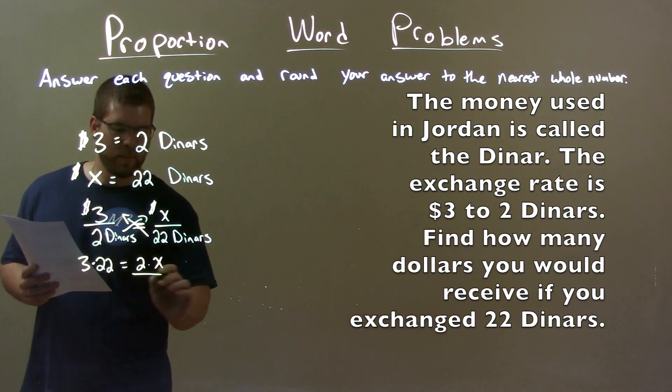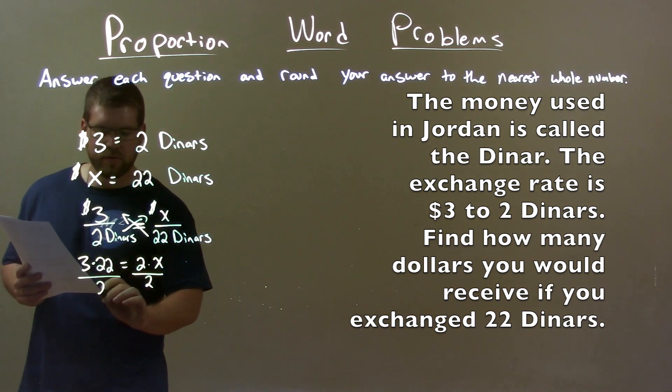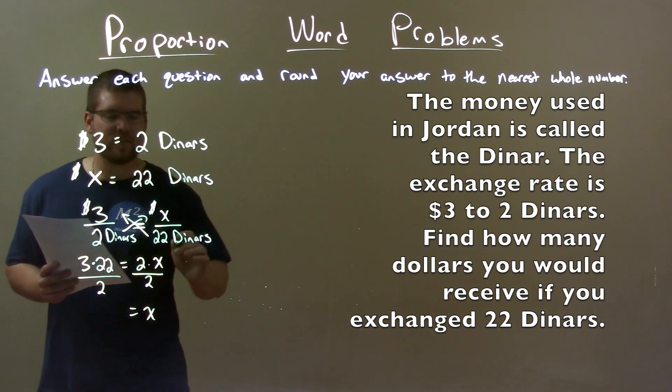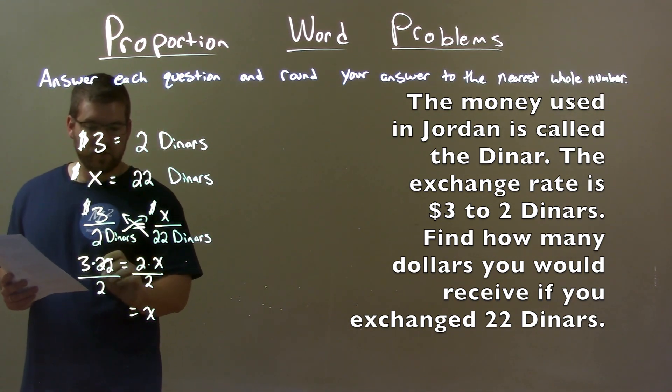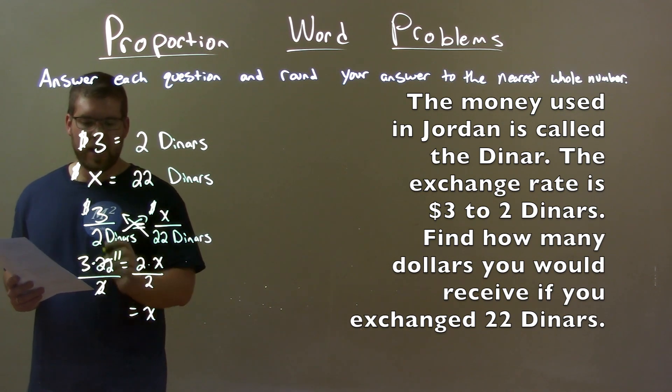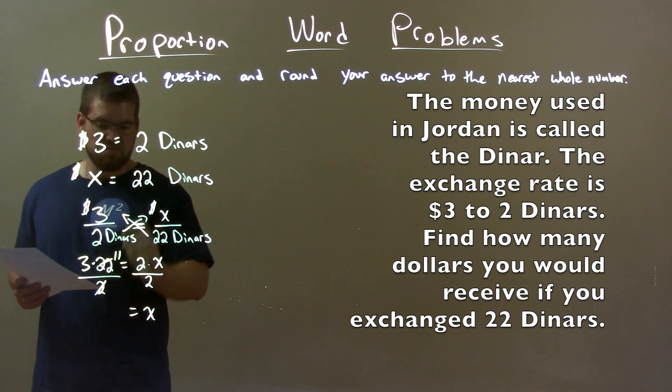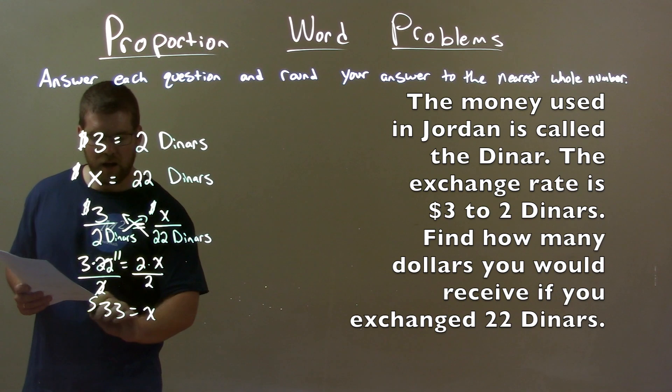Well x I want to get by itself so I'm going to divide by two on both sides. This leaves me with x by itself on the right and 2, well that easily goes into 22 eleven times. So now we're left with 3 times 11 which is 33 dollars,